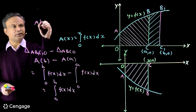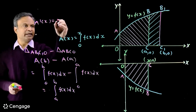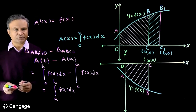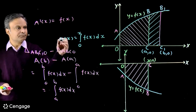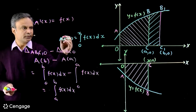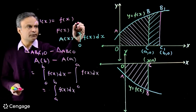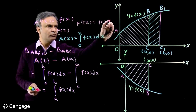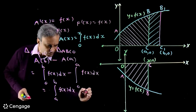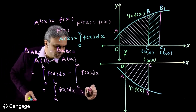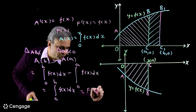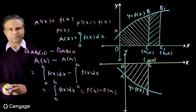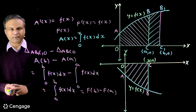Here, the derivative of function A is f(x). Generally we write F′(x) = f(x), so A(x) = F(x). Therefore the definite integral of f(x) from a to b equals F(b) − F(a). We have found the relation between the area under the curve and definite integration.